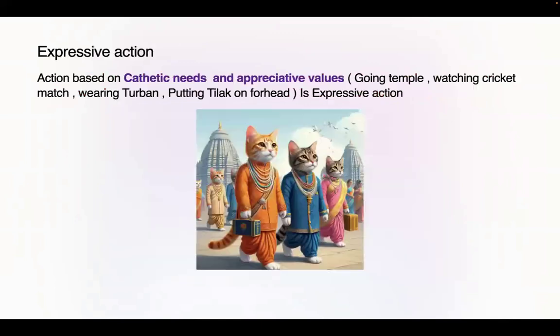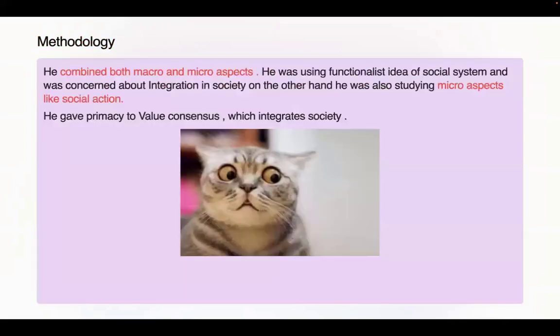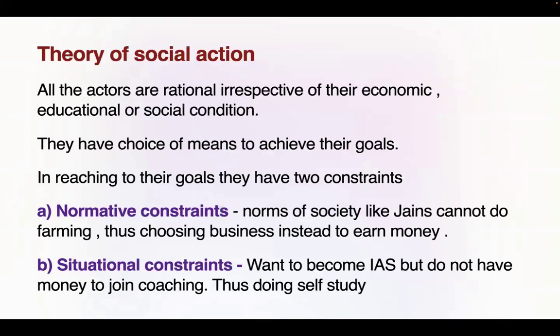Now let's revise quickly. The methodology of Parsons: he was inspired by German idealism, French positivism, functionalism, and British utilitarianism, and he combined micro and macro aspects. His theory of social action states that every actor is rational and has a choice of means to achieve their goals, subject to two constraints. One is normative, based on values. The other is situational, pertaining to circumstances — like if you have money you buy an iPhone, if you don't you buy a second-hand phone. That is a situational constraint.